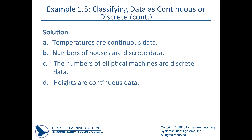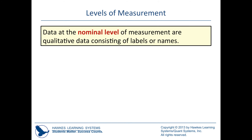Now for levels of measurement. Nominal is a measurement of qualitative data — clearly categorical information with no natural ordering. Examples: gender (male or female), ethnicity, political party. You might think your political party is superior to another, but there's no natural ordering at the nominal level of qualitative data.